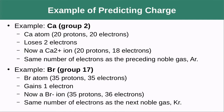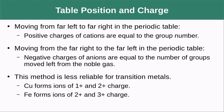For example, calcium in group 2 is expected to lose two electrons, giving a +2 charge. Bromine in group 17 gains an electron, giving a -1 charge. Moving left to right, positive charges of cations equal the group number. Moving right to left, negative charges of anions equal the number of groups moved left of the noble gases. This doesn't work for transition metals, which can have multiple charge forms.